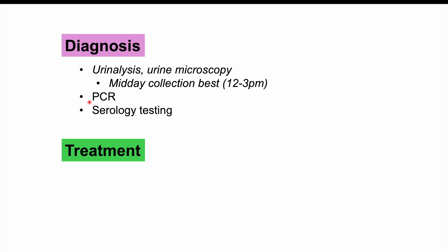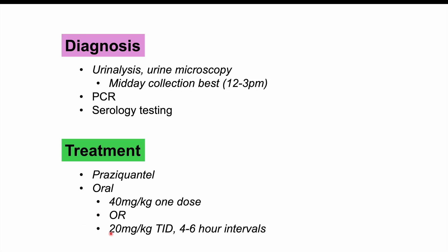The treatment for Schistosoma hematobium infection is praziquantel, given orally. It can be administered as 40 mg/kg in a single dose, or 20 mg/kg three times a day at four-to-six-hour intervals — a total of three doses. Treating early, as opposed to waiting decades, helps reduce the risk of bladder cancer.